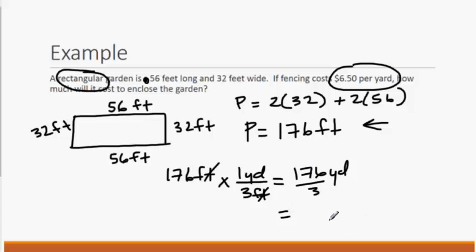176 divided by 3 is 58.7 yards. And if we multiply that times $6.50 per yard, we're going to come up with a price of $381.55.